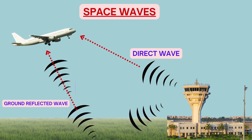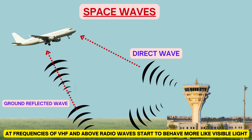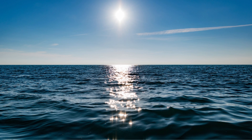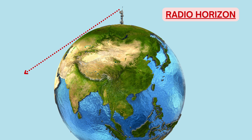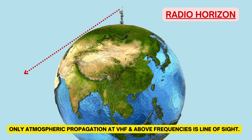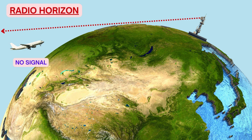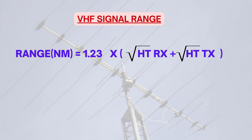Space waves are waves which do not travel along the surface of the earth — they are transmitted upwards. They may consist of two paths: a direct wave and a ground reflected wave. At VHF and above, radio waves start to behave more like visible light. Just as we have a visual horizon with light, we have a radio horizon with radio frequencies, and the only atmospheric propagation at these frequencies is line of sight. Since propagation is line of sight, the distance at which a signal can be received depends on the height of transmitter and receiver. The formula for VHF signal range is shown on the screen, where height is in feet and range is in nautical miles — remember this formula for the examination.